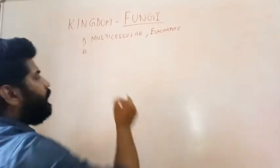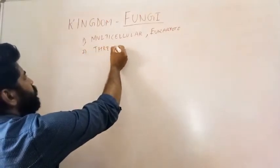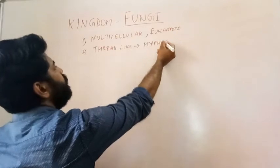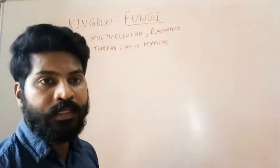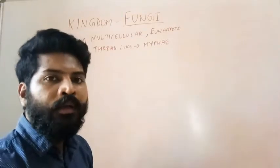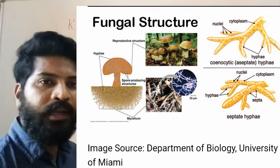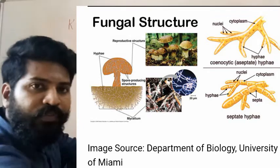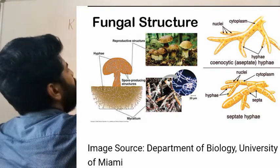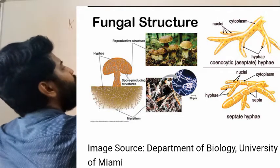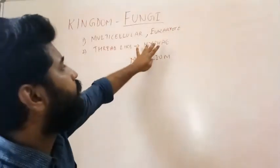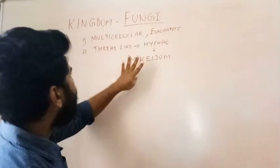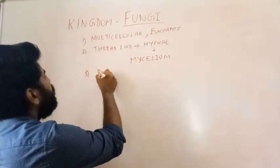Fungi have a well-defined nucleus with a nuclear membrane and DNA in the form of chromosomes inside the nucleus. The fungal body contains thread-like structures called hyphae. If you observe bread mold which is Rhizopus under a microscope with a suitable stain, you find thread-like structures everywhere — that is the body of the fungus. Many hyphae come together to form a mycelium, which forms a mat on the surface.